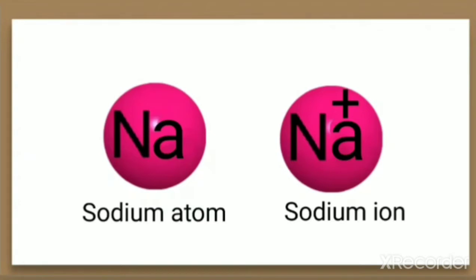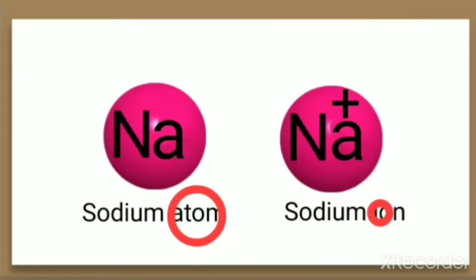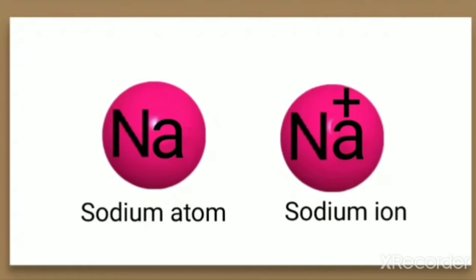But if a sodium atom develops a charge, then instead of calling it a sodium atom, we use the word ion. So it becomes a sodium ion. When you compare the two structures — sodium atom and sodium ion — the atom is electrically neutral, but the ion has some charge. In the case of sodium, there is no net charge on the atom, but the sodium ion has a positive charge. Sodium is a metal, so metals usually develop positive charges.